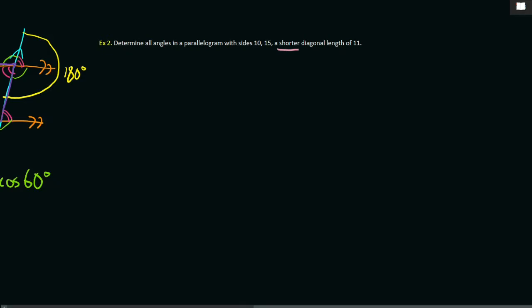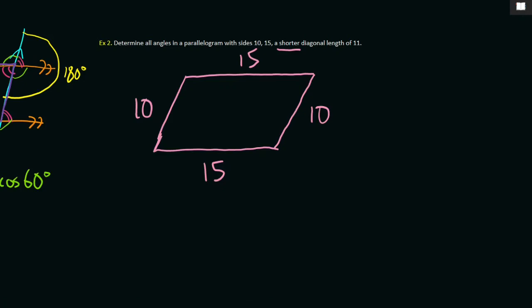I've given the shorter diagonal, because why not? It could be the longer diagonal, it doesn't really matter. Let's set up our diagram with these numbers, and I don't know if this is to scale, but it doesn't really matter if it's to scale or not. 10, 15, which means this is 10 and this is also 15. Sorry, I didn't read the question. Determine all angles in a parallelogram with sides 10, 15, and a shorter diagonal length of 11. So this shorter diagonal down the middle, I guess I'll do a dotted line, is 11.